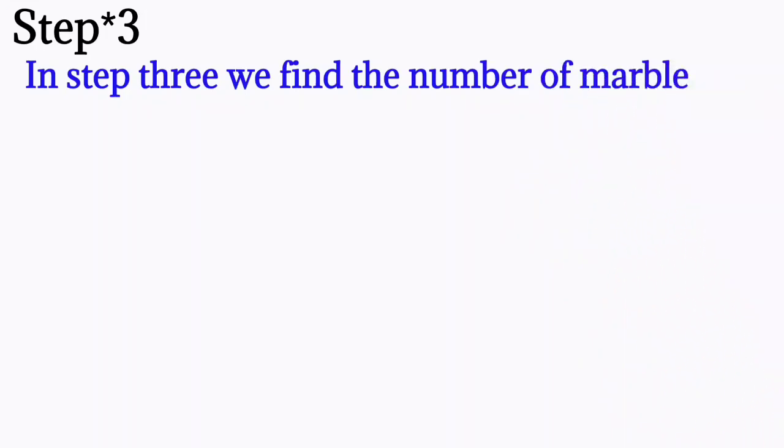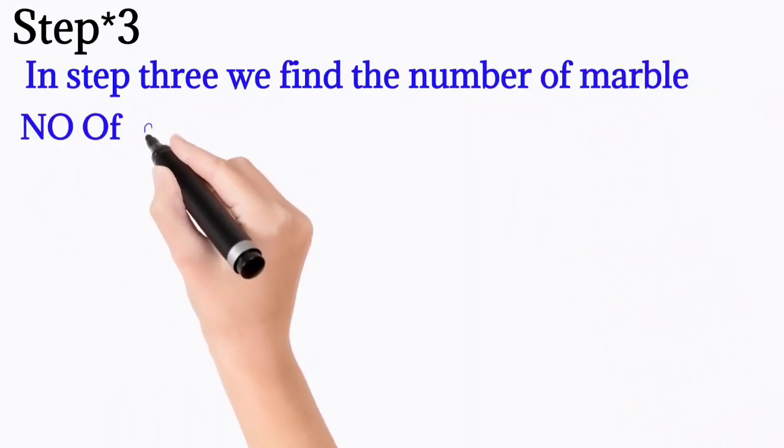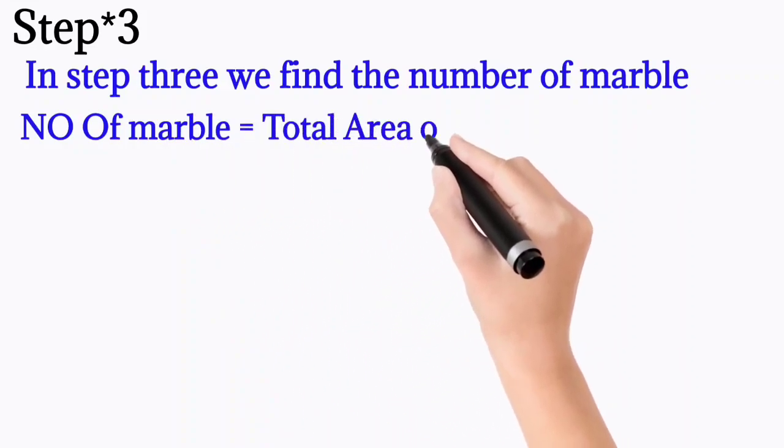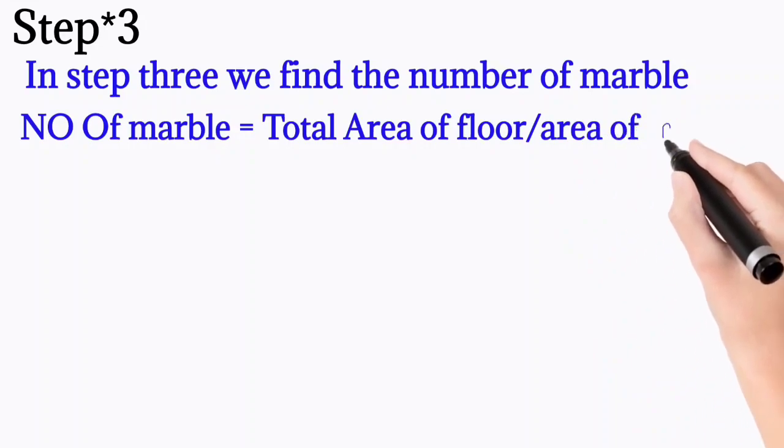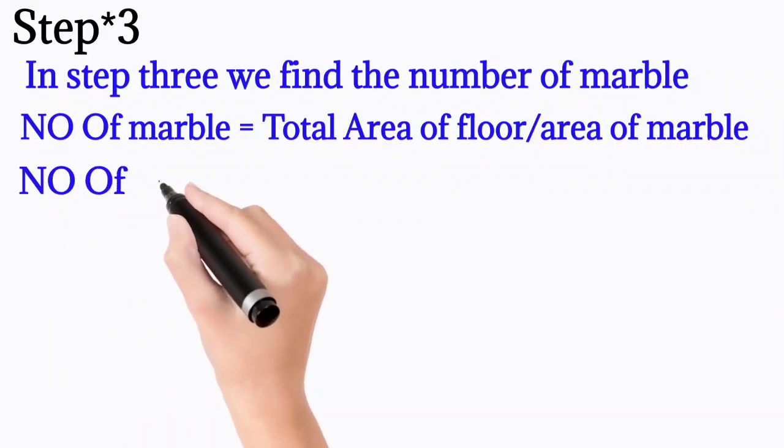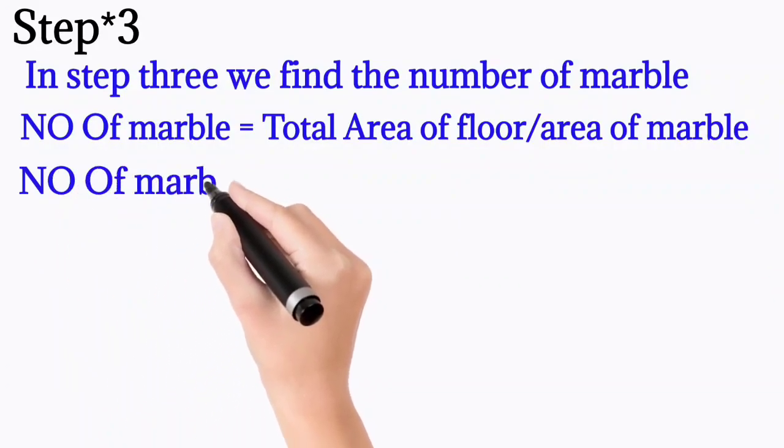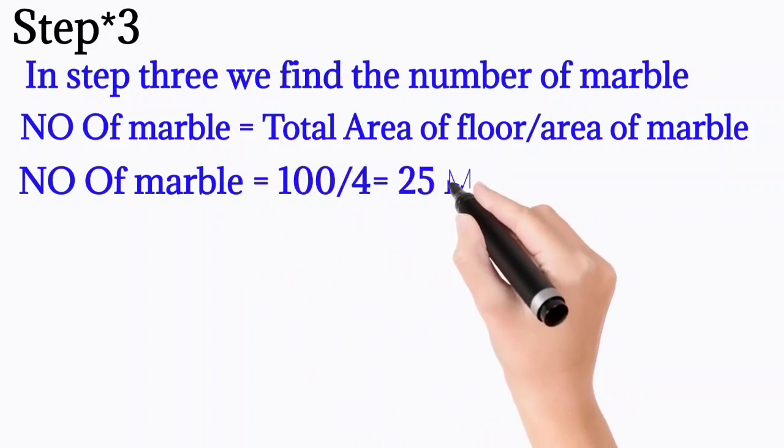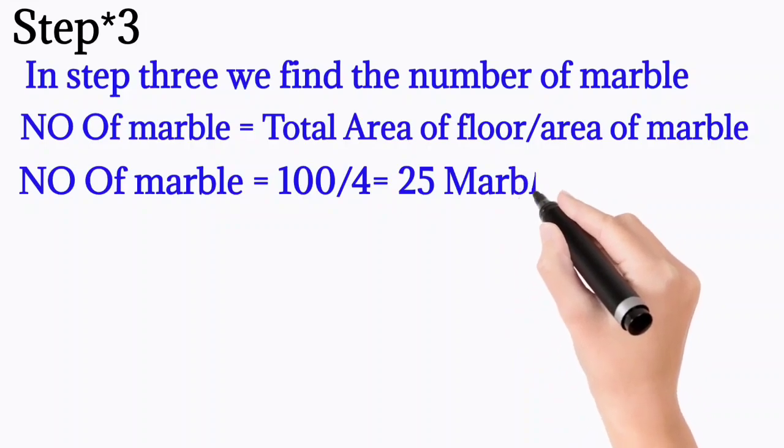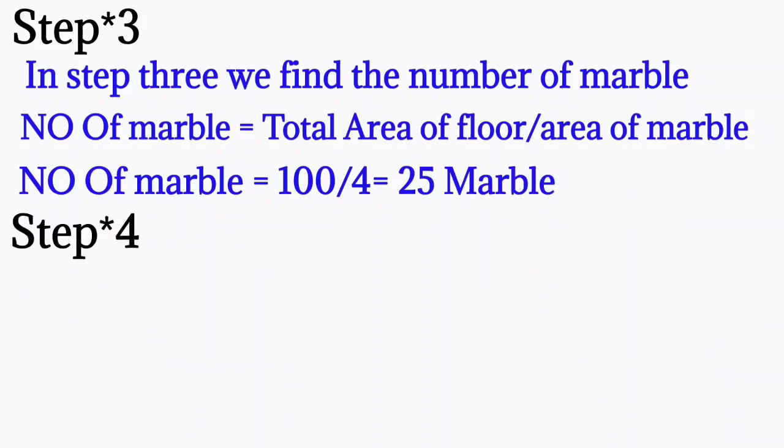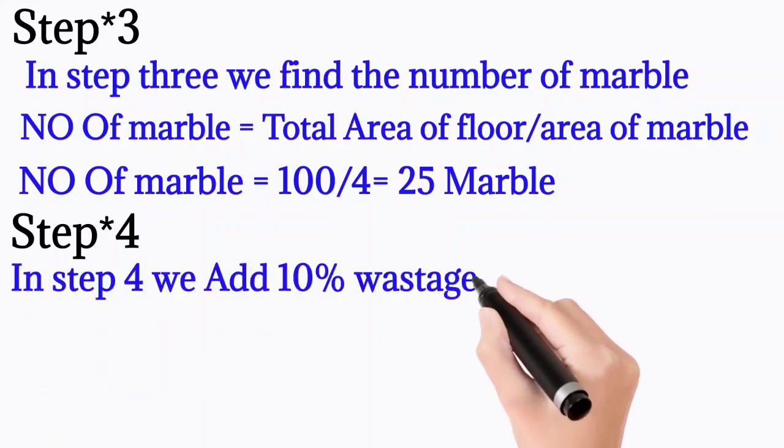Step 3: In step 3 we find the number of marble. Number of marble is equal to total area of floor divided by area of marble. So number of marble is equal to 100 divided by 4, which equals 25 marbles.